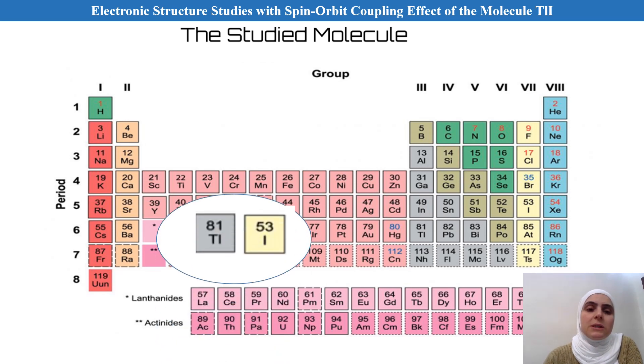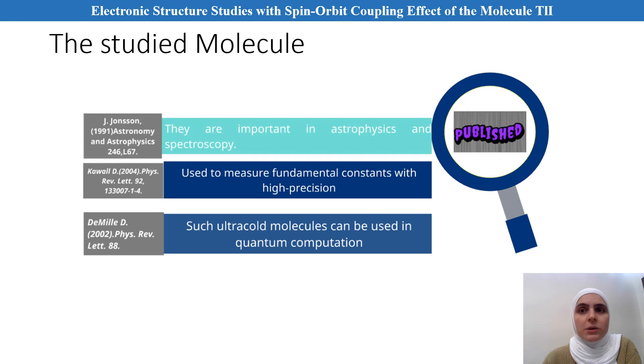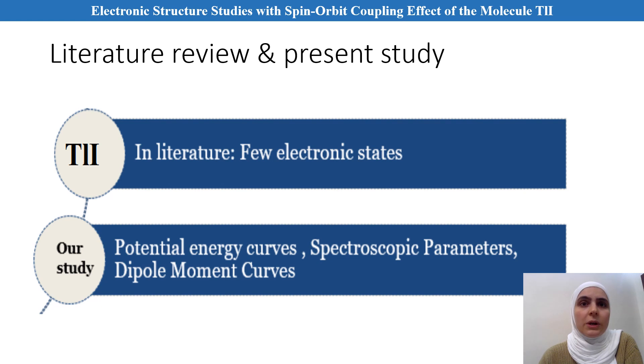Now the chosen molecule is T-L-I. You may ask us about the reason behind choosing our molecule, and that's because it's important in astrophysics and in spectroscopy. It's being used to measure fundamental constants with high precision. Such ultra-cold molecules can be used in quantum computations. Moreover, some previous studies included only few electronic states of T-L-I molecule. In our present work, we introduced the potential energy curves, spectroscopic parameters, as much as the dipole moment curves of this molecule.